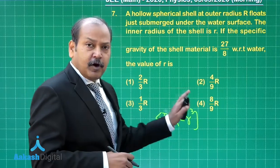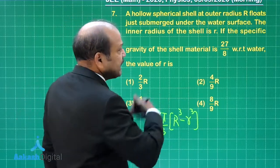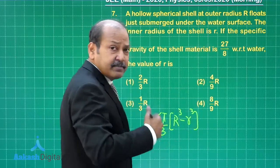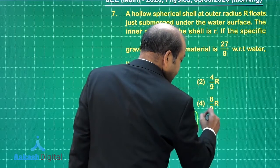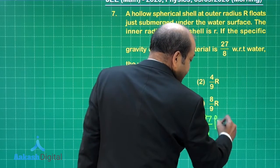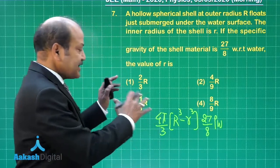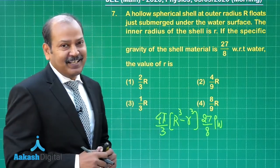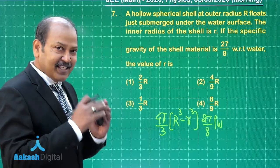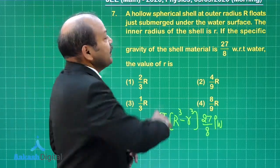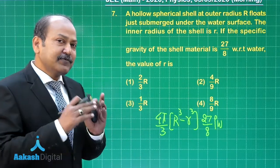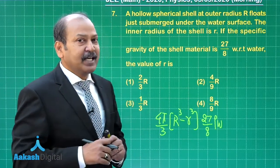This is the volume of the material of the shell multiplied by density of the shell and that density is 27 by 8 times density of water. That means we can put it as this into 27 by 8 multiplied by density of water. That is the mass of the shell.